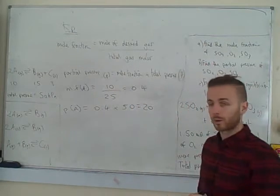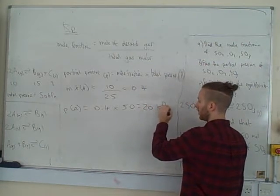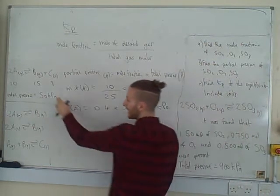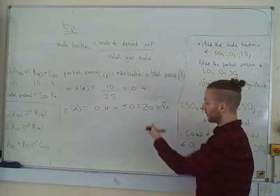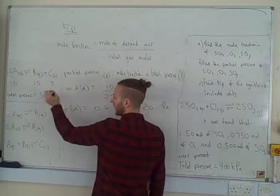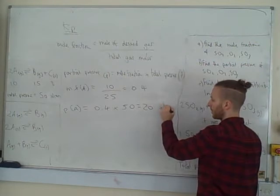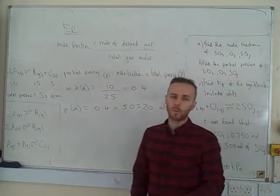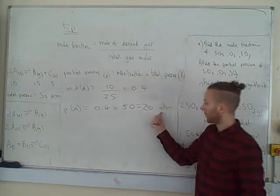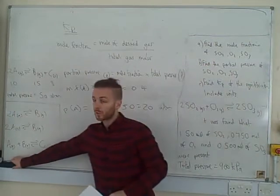You do need units for partial pressure. If your total pressure is in kilopascals, your partial pressure will be in kilopascals. If it's in pascals, write your answer in pascals; if in atm, write it in atmospheres. If you need to convert, one atmosphere is 101 kilopascals. Usually, whatever unit they give you for total pressure, just use the same unit for your answer.